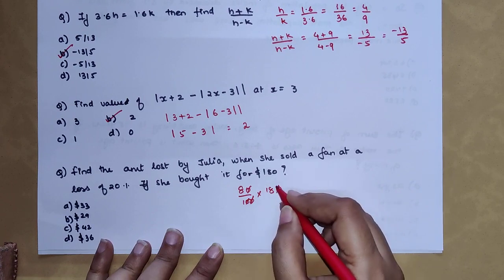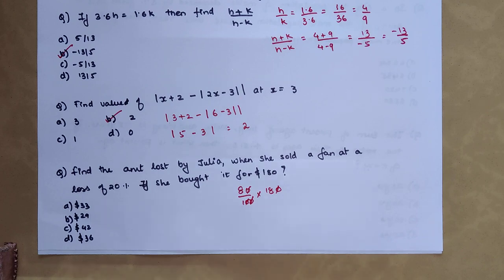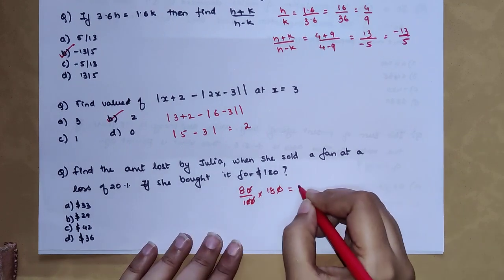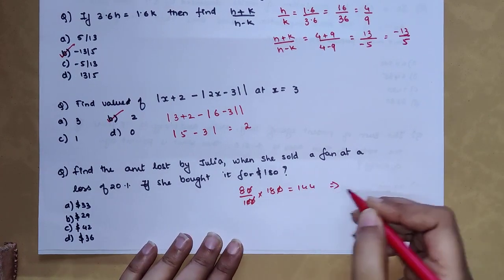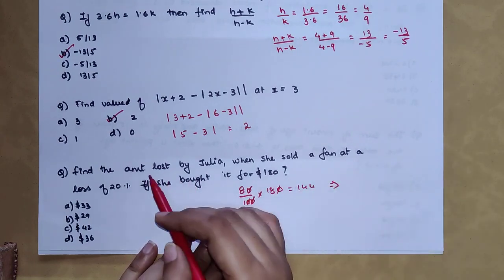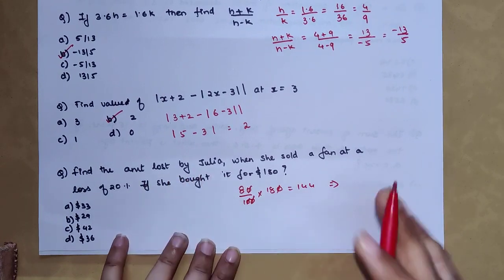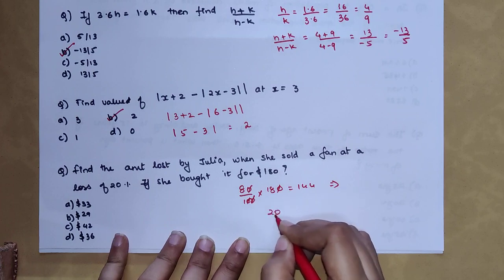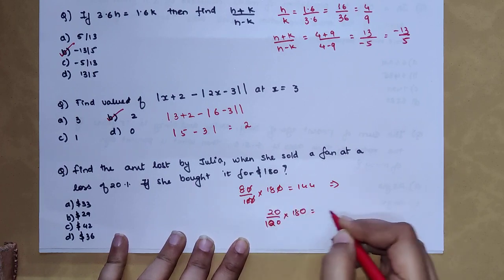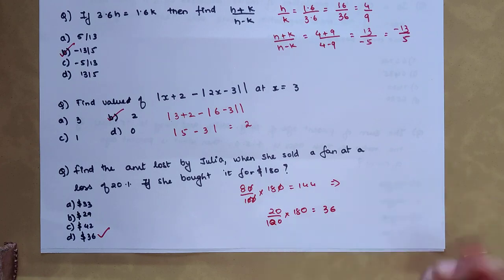So you get 144. Here in this case you will have to subtract from 180. Wait, sorry - see here the question was find the amount lost by Julia. So you just had to find the amount. Basically you had to do just 20 percent of 180. You would have got 36 and that should be your answer. Had they told you what will be the final amount at which she sold, then this method would have worked brilliantly.